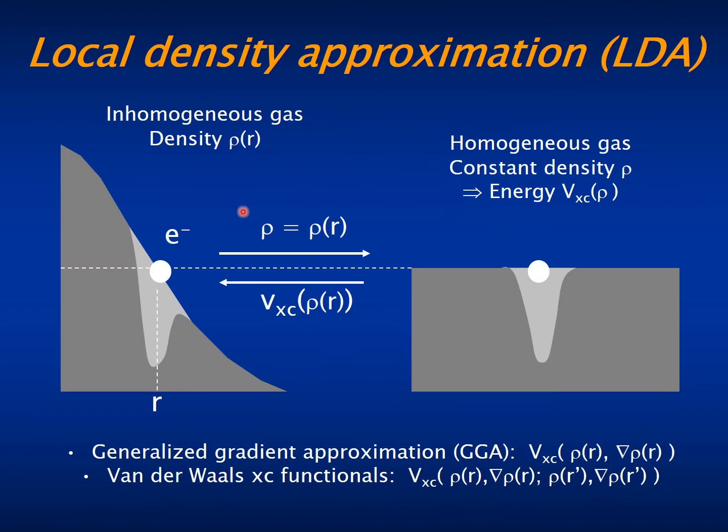Still, the exchange and correlation potential that one electron at point r feels is a function of the density at all other points. So it is a function of an infinite number of variables. In practice, one substitutes this complicated function by a much simpler approximation.